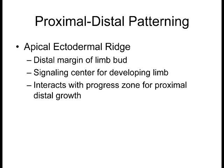One of the things that you're going to have to understand and know, which is critical, is after the limb bud forms, the most distal region of the limb bud, you get this slight protrusion which is called the apical ectodermal ridge, or the AER — the apical ectodermal ridge.